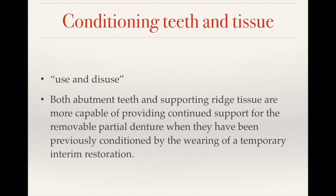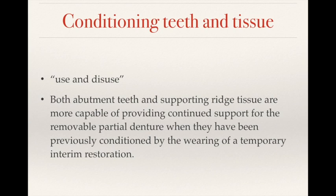We also need to use the interim prosthesis to provide support during treatment. It can also help to condition the teeth and tissue. This is the theory of use and disuse. Some patients, when they have lost a tooth for a long time, their soft tissue or adjacent teeth become weaker because they haven't really used them properly. Eventually, when you try to place a definitive prosthesis, they might not have a very good abutment or good tissue to accommodate it. So you might want to train the adjacent teeth or the soft tissues during Phase 1 treatment.